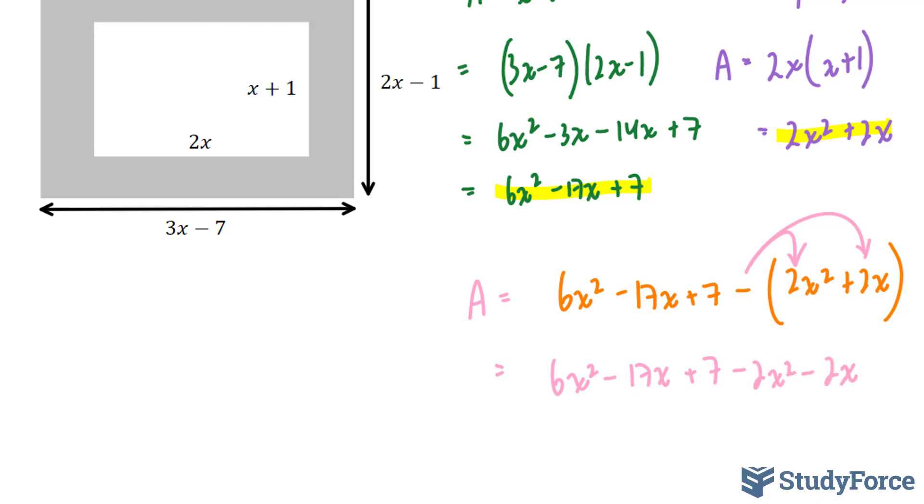I'm going to highlight the like terms. This term and this term are alike. This term and this term are alike. Let's combine them. We have 4x squared, 6 minus 2, minus 19x plus 7.